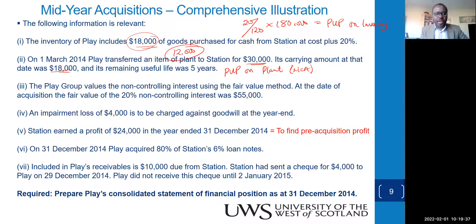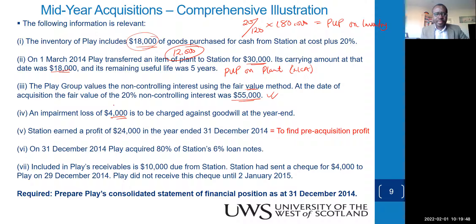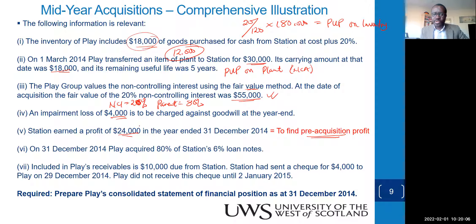The group values non-controlling interest using the fair value method, and the fair value of NCI is given as 55,000. There is an impairment loss of 4,000 — NCI takes 20% and the parent takes 80%. Station earned a profit during the year to 31st December. To find pre-acquisition, we note the acquisition was on 1st March — March through December is 10 months, so we prorate at 10/12.